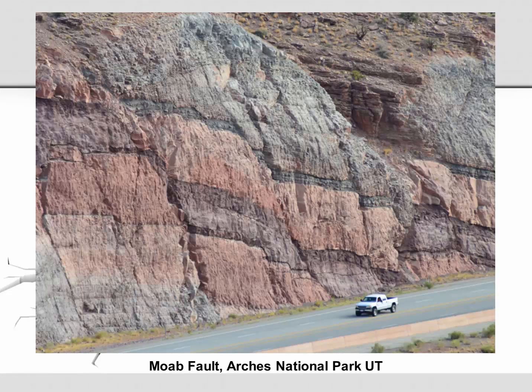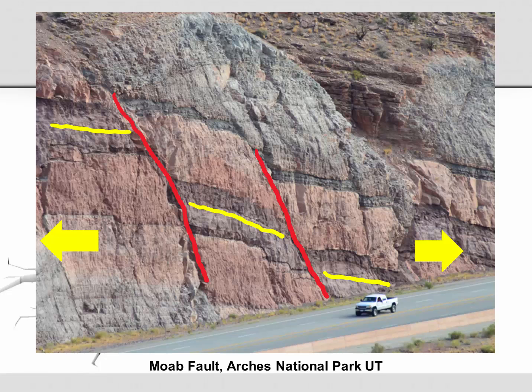Moab Fault is a dramatic fault revealed in a road cut just outside of Arches National Park in Utah. Here we can see several very large faults. As we identify the previously aligned layers, we can see that this brown stripe used to all be the same layer, but now has been offset with several normal faults. This represents divergent motion or tension.